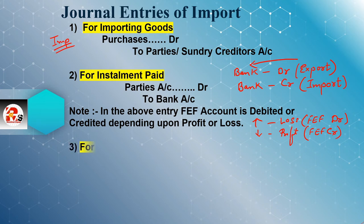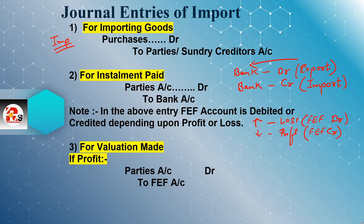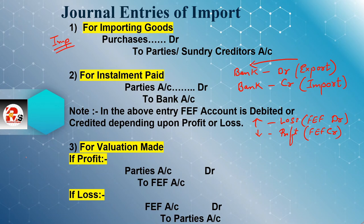You have to remember that valuation is done on 31st March. On 31st March, if any installment is pending after that date, we go for valuation. In case of valuation, if it is a profit, FEF account is credited; if it is a loss, FEF account is debited. So if profit: parties account debit to FEF; if loss: FEF account debit to parties account. The valuation concept in import and export is the same — only profit and loss differ.